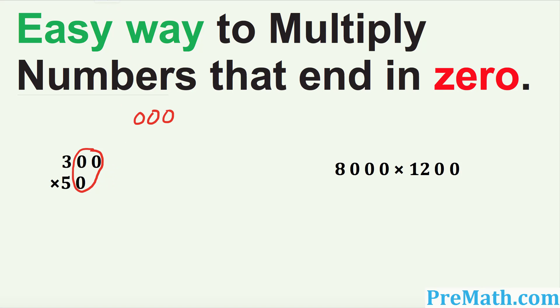Now what happens is our number simply becomes 3 times 5. Do you see that? So those zeros are gone, so our number becomes 3 times 5, which is equal to 15.